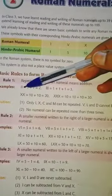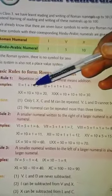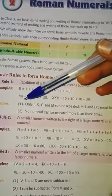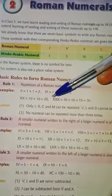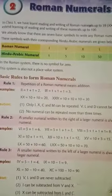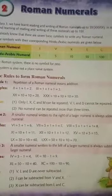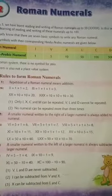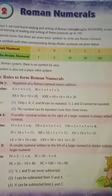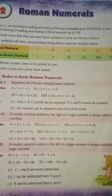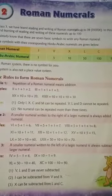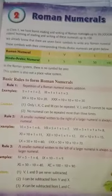We can write: XX means 10 plus 10 equals 20, and XXX means 10 plus 10 plus 10 equals 30. Rule: I, X, C, and M can be repeated, but V, L, and D cannot be repeated. Also, no numeral can be repeated more than three times.